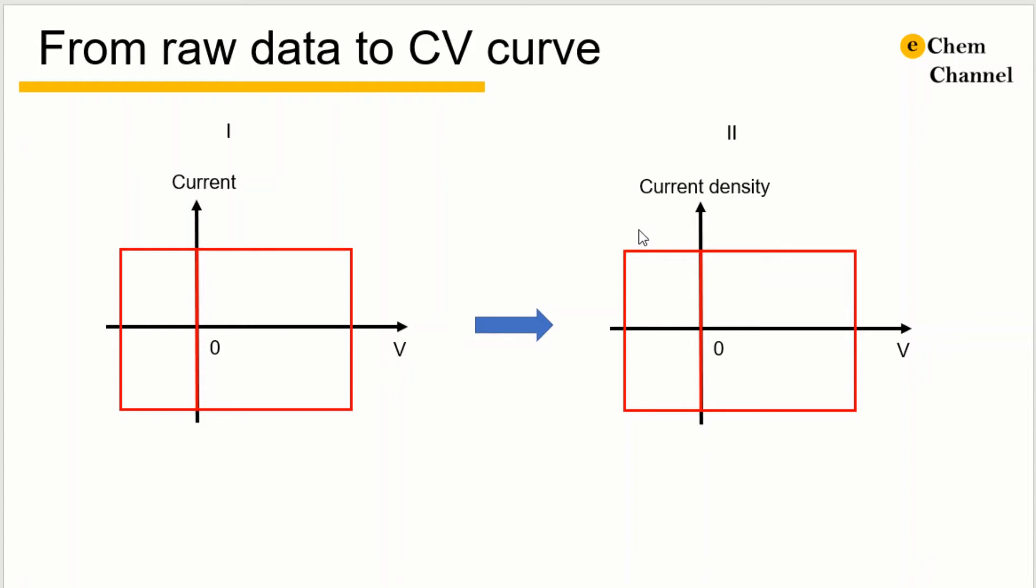Here we should be more careful about the unit conversion. For example, if our current is in microampere and our mass is in milligram, then the current density should be 10 to the negative 3 ampere per gram.